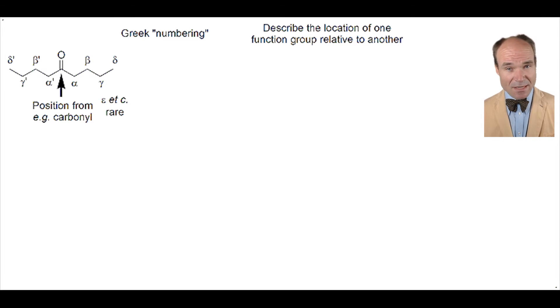So let's look at some examples. Here, we seek to describe where the hydroxyl group is in relation to the ketone's carbonyl. Well, it's on the alpha carbon to the carbonyl. So the locational relationship is alpha hydroxy ketone.